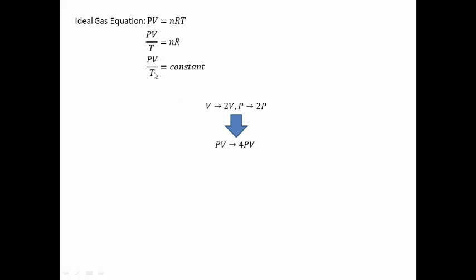We have established that PV/T must be constant. Since PV is 4 times what it was before, the temperature must also be 4 times what it was before.